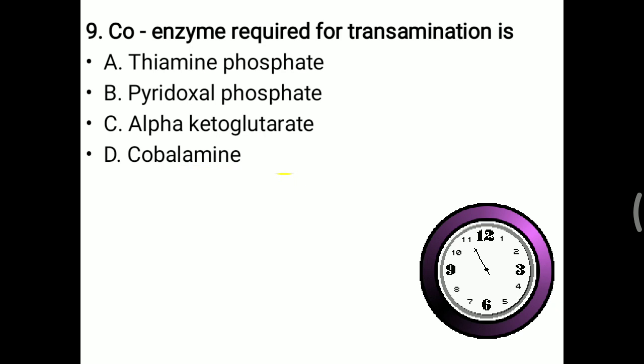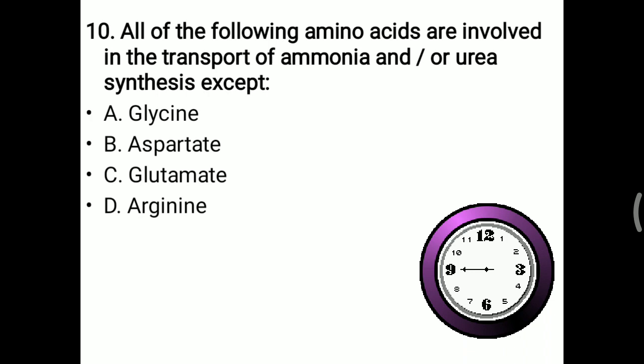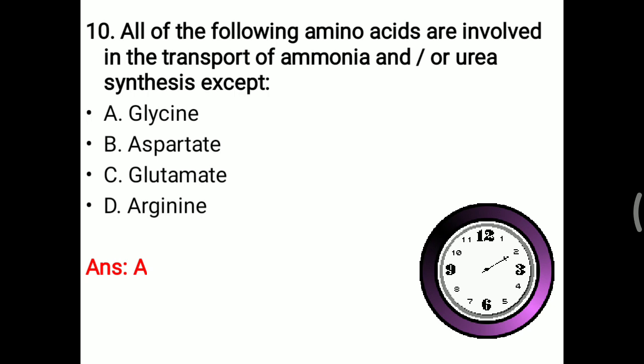Next MCQ: all of the following amino acids are involved in transport of ammonia and/or urea synthesis except. Options: glycine, aspartate, glutamate, and arginine. Arginine is part of the urea cycle. Glutamate transports ammonia. Aspartate also participates in ammonia transport and urea synthesis. But glycine is not involved in ammonia transport or urea formation. So the right answer is A — glycine.